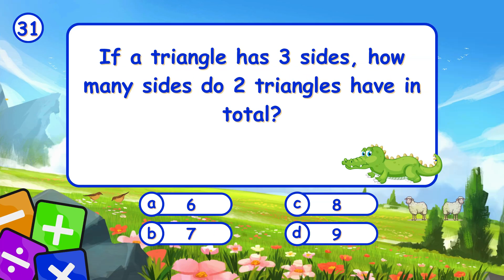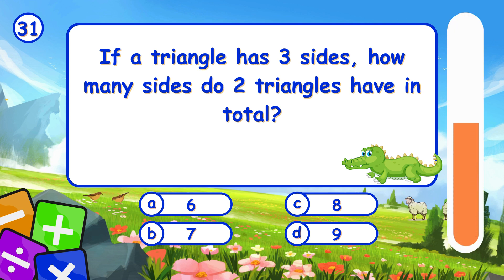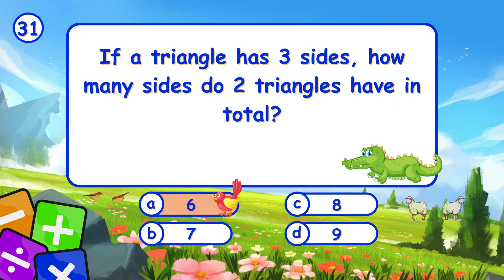If a triangle has 3 sides, how many sides do 2 triangles have in total? It's A, 6. 2 triangles have 3 sides each. So 2 times 3 is 6.